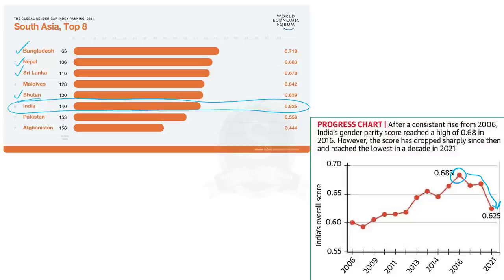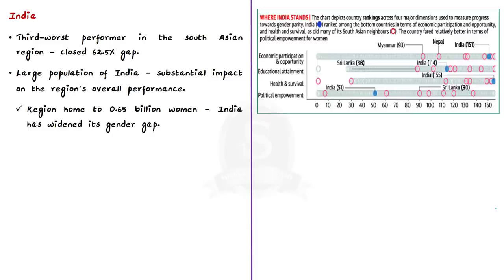India is the third worst performer in the region and has only closed 62.5 percent of its gender gap. Because of its large population, India's performance has a substantial impact on the region's overall performance. The South Asian region is home to 0.65 billion women, but due to India, the region's gender gap has widened this year.